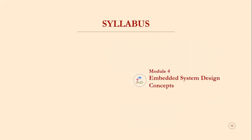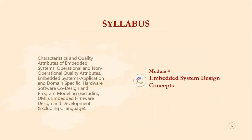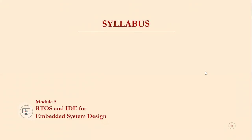Module 4 covers embedded system design concepts. Topics include characteristics and quality attributes of embedded systems — both operational and non-operational — application-specific embedded systems with a washing machine example, domain-specific embedded systems, hardware-software co-design approaches, and program modeling approaches (excluding UML), as well as embedded firmware design and development (excluding C language).